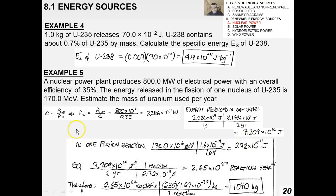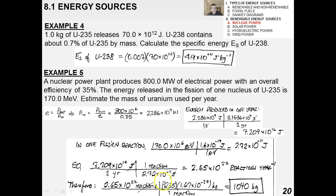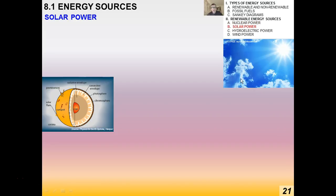Using the bridge method: one fission reaction releases 2.72 × 10⁻¹¹ joules. Dividing the annual energy by energy per reaction gives 2.65 × 10²⁷ reactions per year. From this, the mass of uranium used per year is just over a thousand kilograms — not that much, remembering that 15 kilograms is the critical mass needed to start the chain reaction.